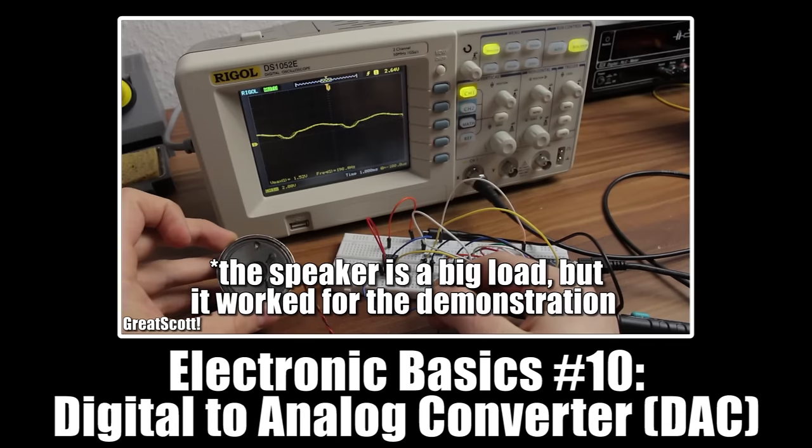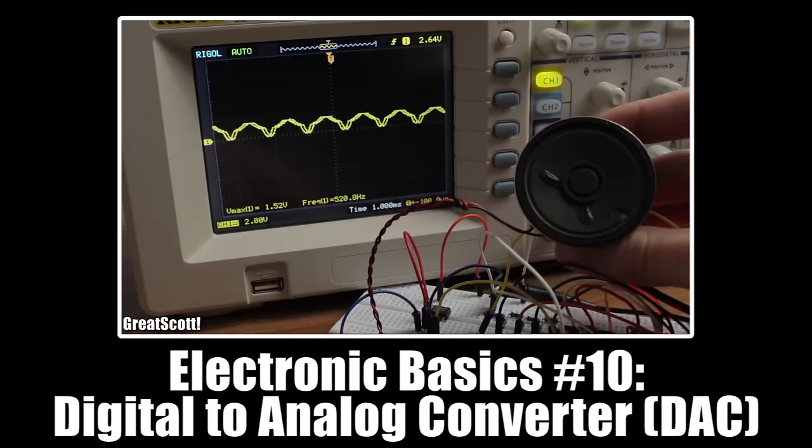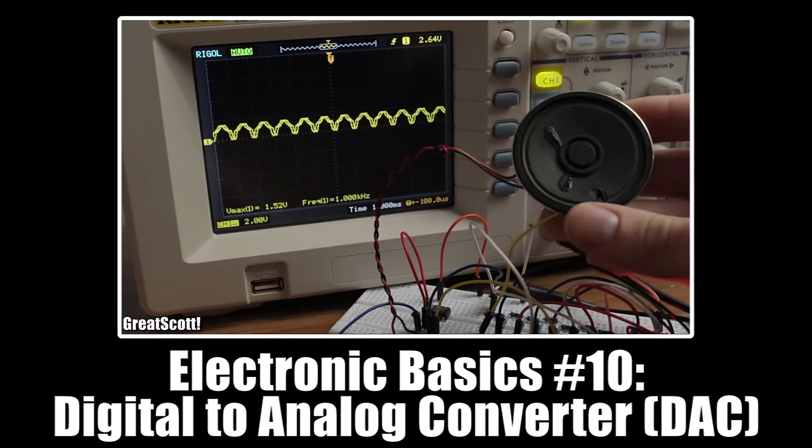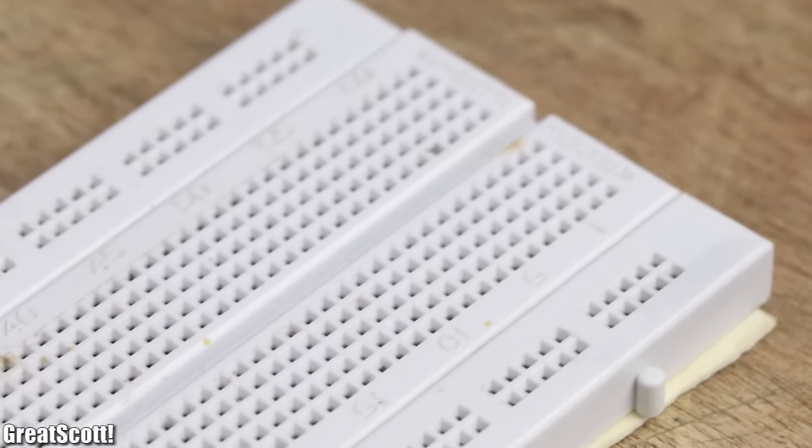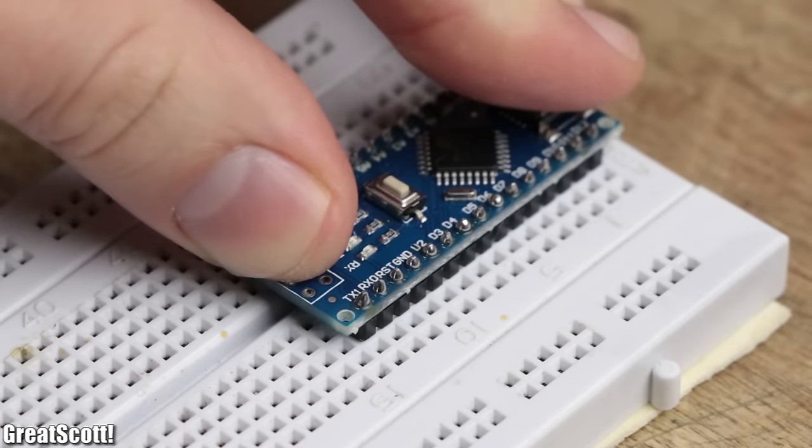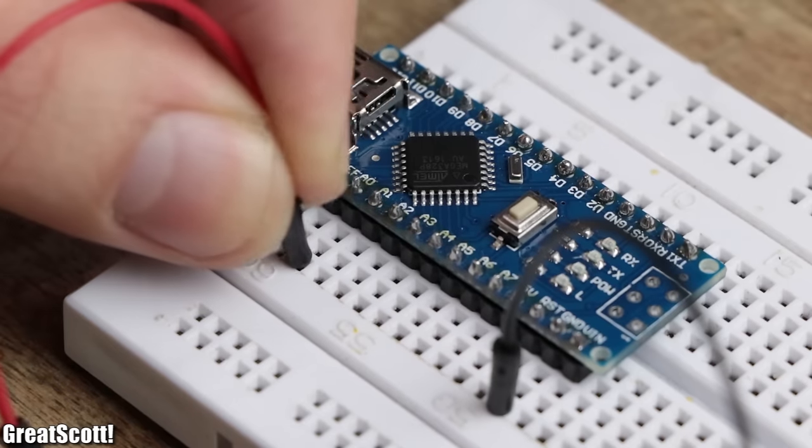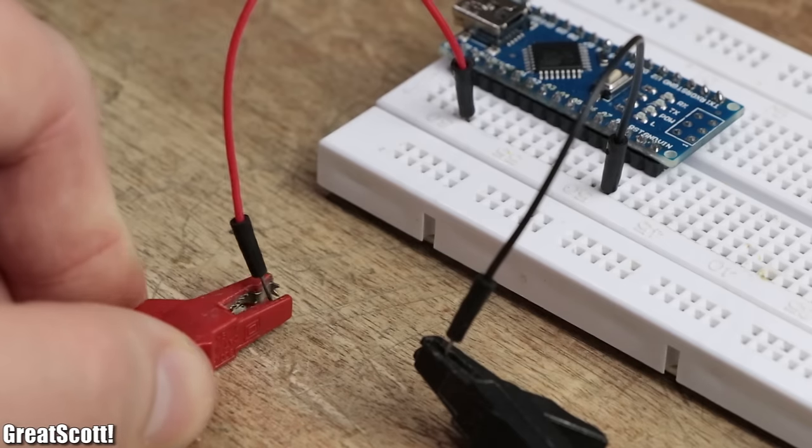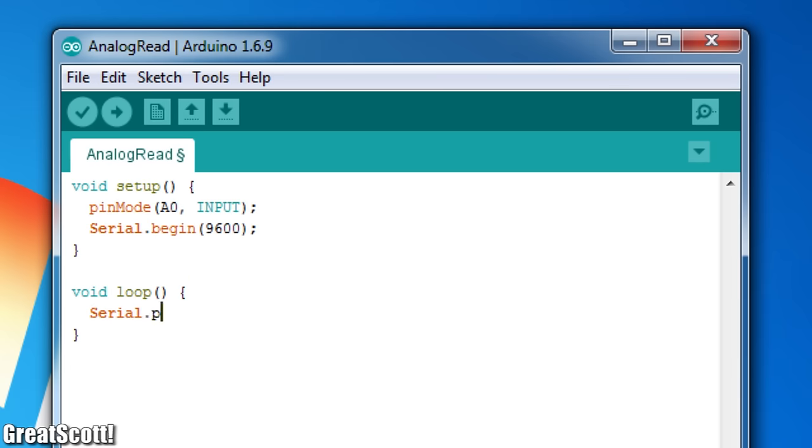In a previous basics video, I showed you how to use the digital output pins of an Arduino to create an analog signal. Many of you might already know that you can use the analog pins of an Arduino to do the reverse and thus convert an analog voltage into a 10-bit digital value.